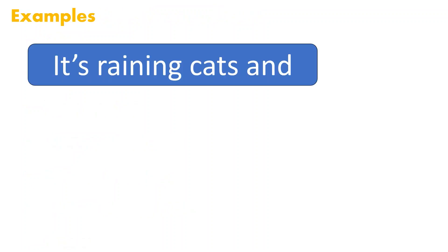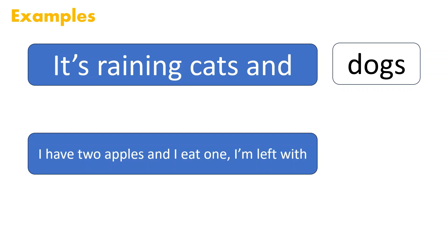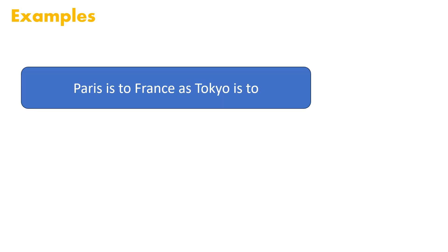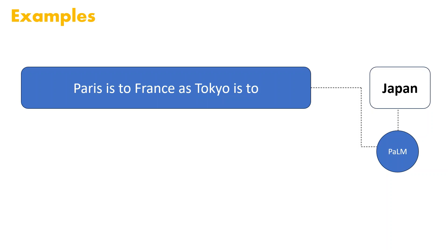If we give a large language model the input 'it is a running cat and,' the model will probably predict that 'dog' is the most likely word to follow. We can use this autocomplete-like functionality to solve many tasks. For example, 'I have two apples and I eat one, I am left with' — the model predicts 'one.' Another example: 'Paris is to France as Tokyo is to' — using the PaLM LLM by Google, the model outputs 'Japan,' showing that LLMs have world knowledge learned from training data.